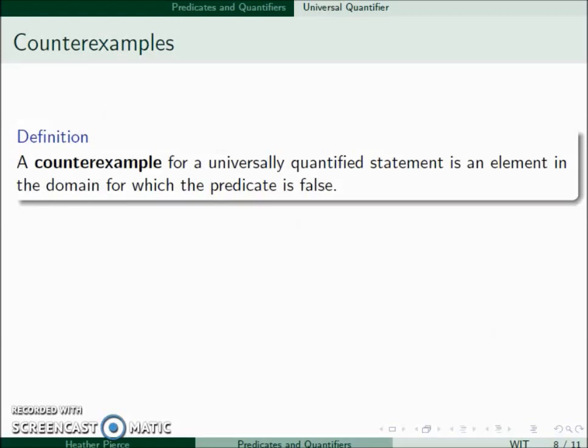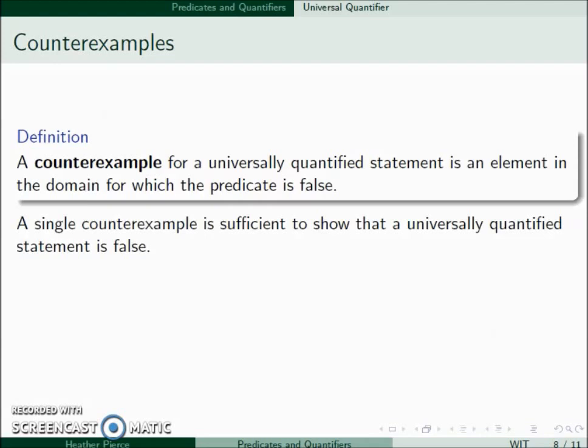A counterexample for a universally quantified statement is an element in the domain for which the predicate is false. So a universally quantified statement says this has to be true no matter what value I stick in. To prove a universally quantified statement is false, I need to find an example that makes it false. A single counterexample is all that you need to show a universally quantified statement is false.